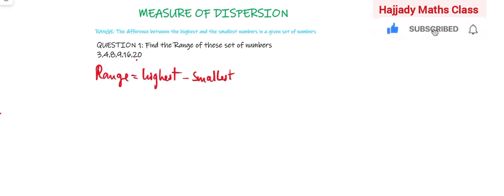while our smallest is 3. So, this is going to be 20 minus 3, which is 17.